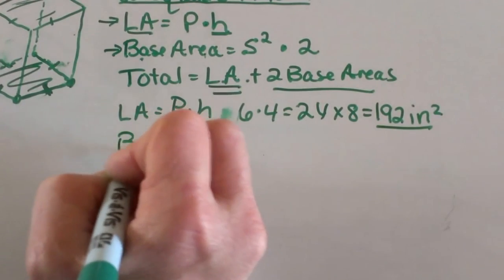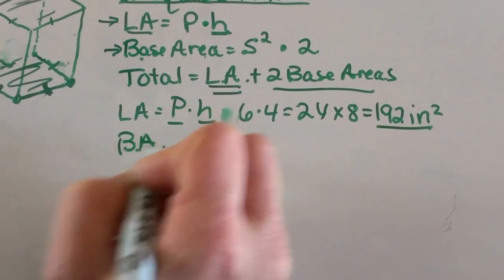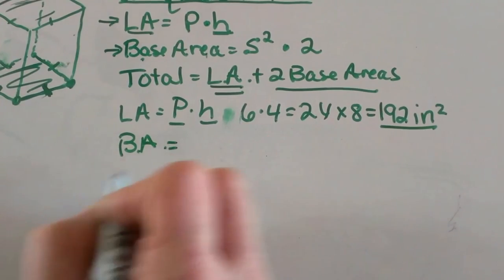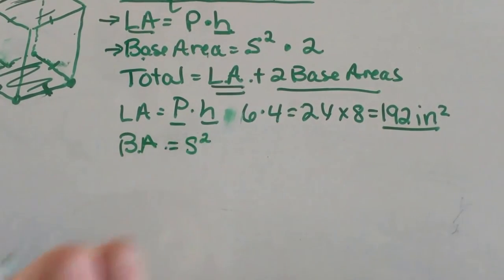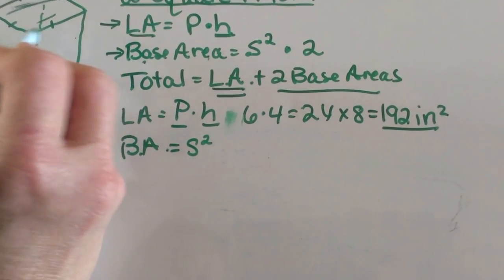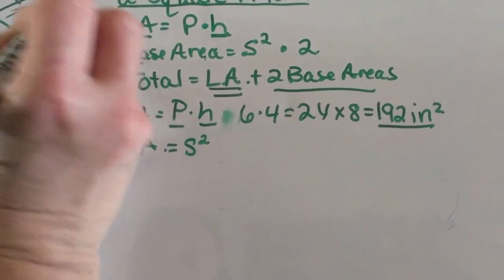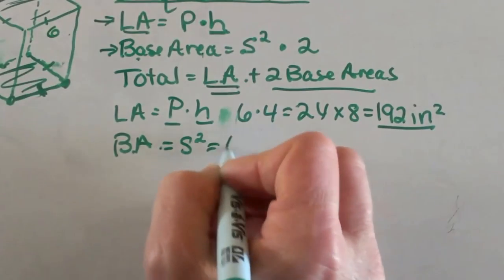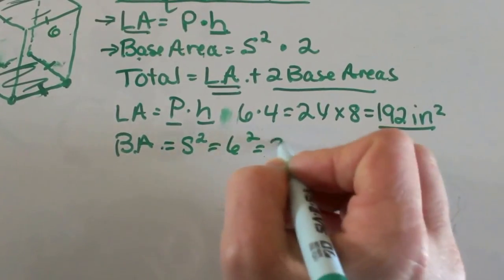Now let's look at the base area. I'm going to abbreviate that as BA for base area. And our base is a square so it's very simply side squared. Well the side of the base, all four sides are 6. So I'm just going to take 6 and square it and I get 36.